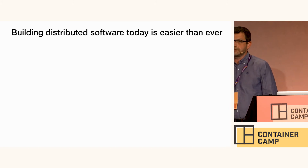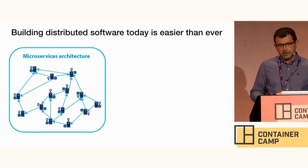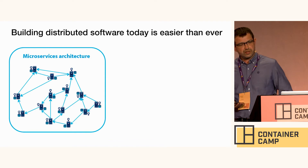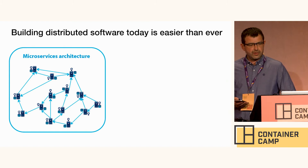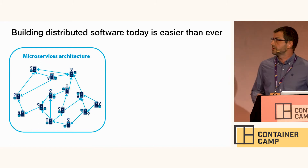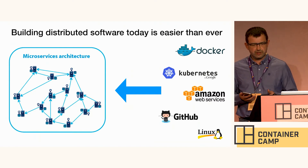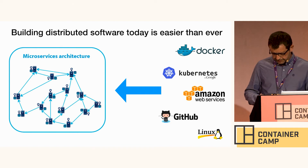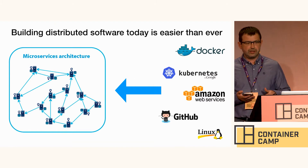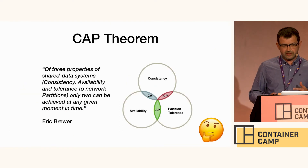Another point is that building distributed software today is much easier than ever. We have the new concept of microservice architecture where you build a highly distributed system composed from multiple microservices linked and meshed together into a single communication. We have a lot of technologies that allow us to build this kind of software — like Docker, Kubernetes, and many open source tools coming from Linux. Still, we know how to build, scale, deploy, and maybe even monitor this highly distributed system.